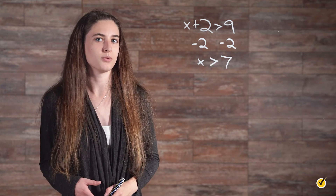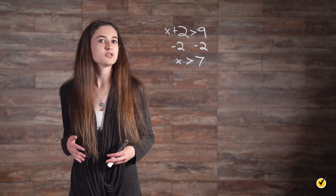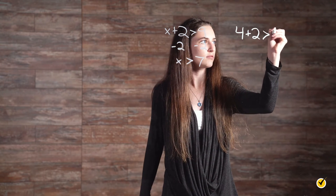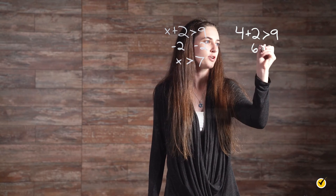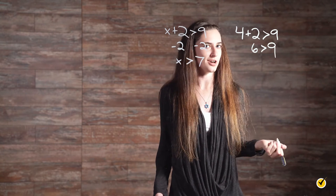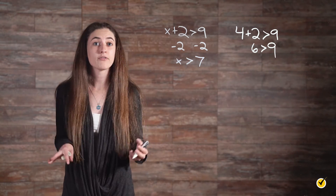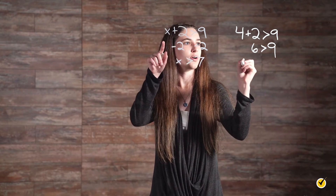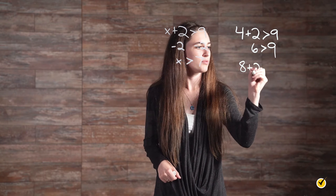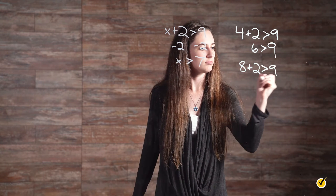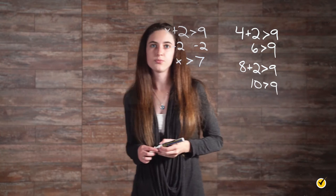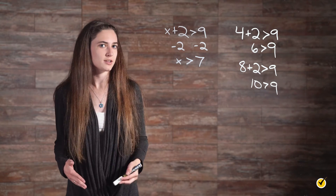To quickly check your answer, let's use a value of 4 for x. Plugging in, 4 plus 2 is greater than 9 gives you 6 is greater than 9, which is not true. However, using a value of 8 for x, 8 plus 2 is greater than 9 gives you 10 is greater than 9, which is true. It's above 7, so that means it's correct.